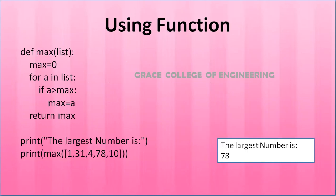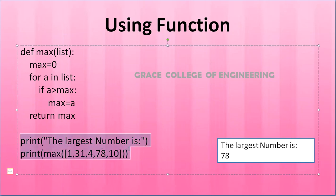Next, using a user-defined function. The main function starts here. Print the largest number, then call print(max(list)) — max() here is our user-defined function. It will automatically move to the function definition with the values 1, 31, 4, 78, 10 passed as arguments.